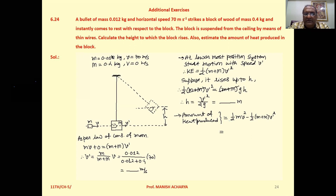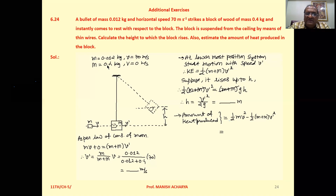Mass of the bullet is 0.012 kilogram, moving with a speed of 70 meter per second. Mass of the block is 0.4 kilogram and the speed of the block is 0, meaning the block is initially stationary.